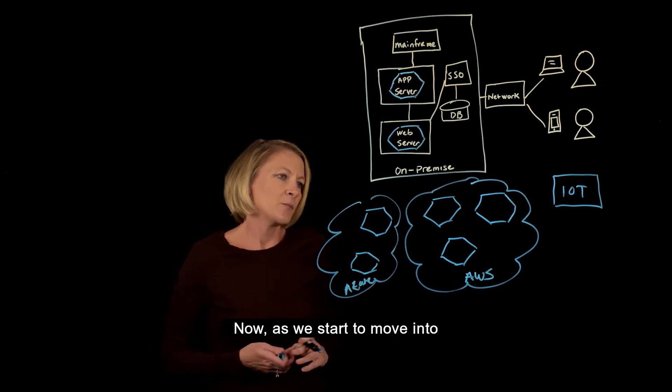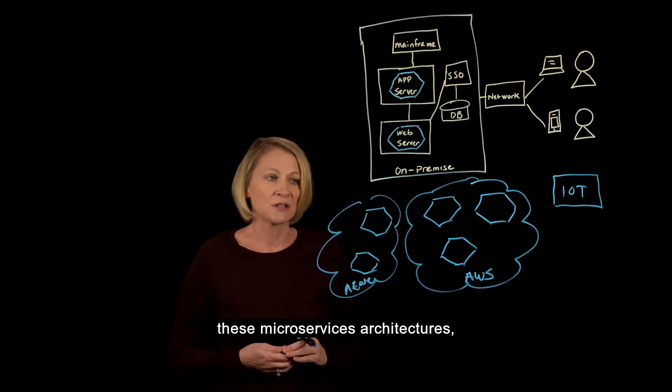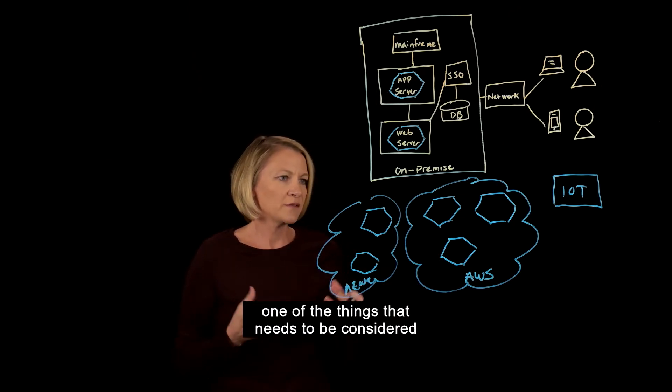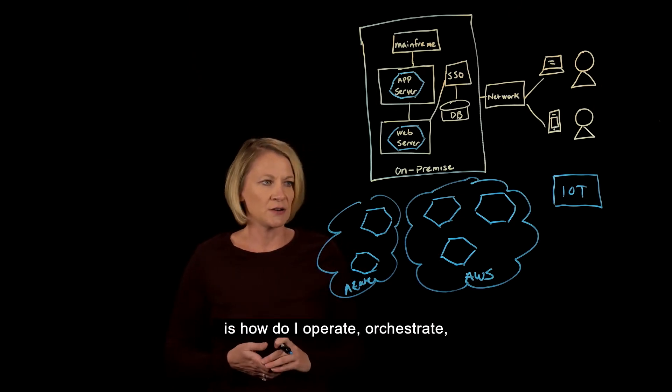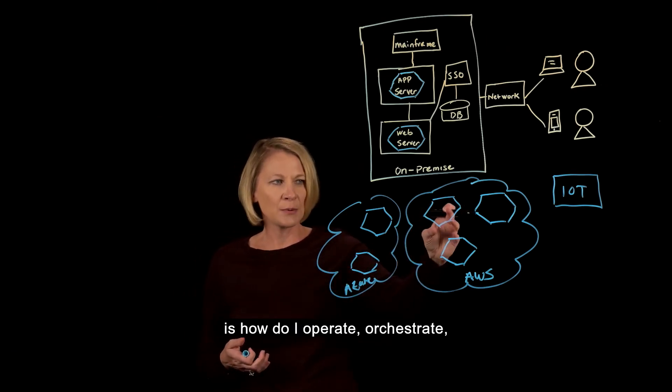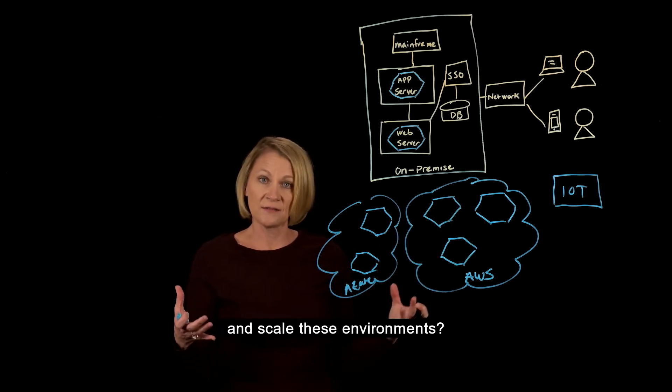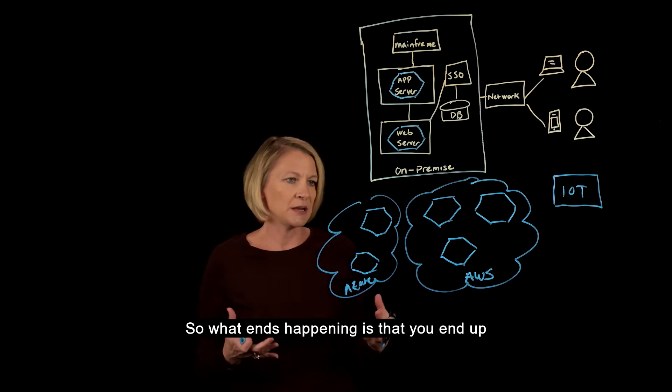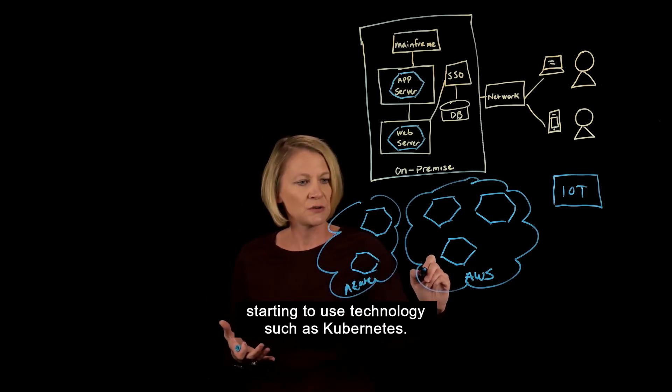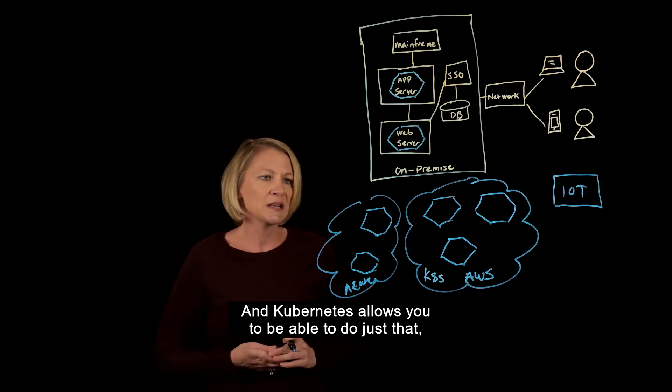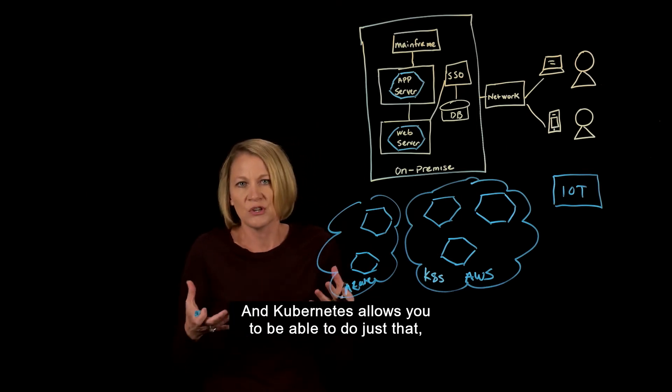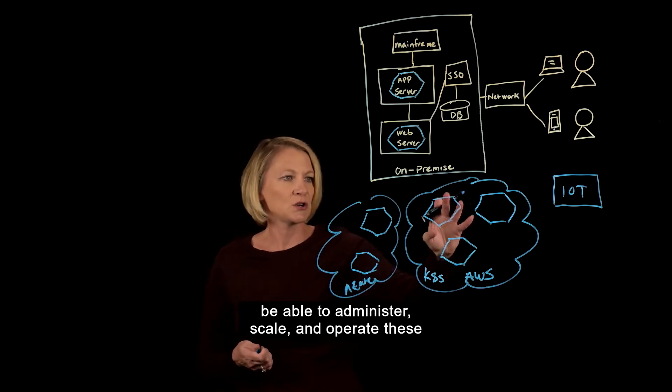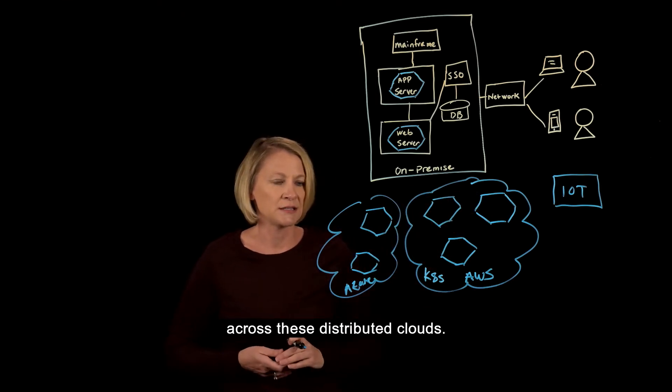As we move into these microservices architectures, one of the things that needs to be considered is how do I operate, orchestrate, and scale these environments. So what ends up happening is you start to use technologies such as Kubernetes, which allows you to administer, scale, and operate these across distributed clouds.